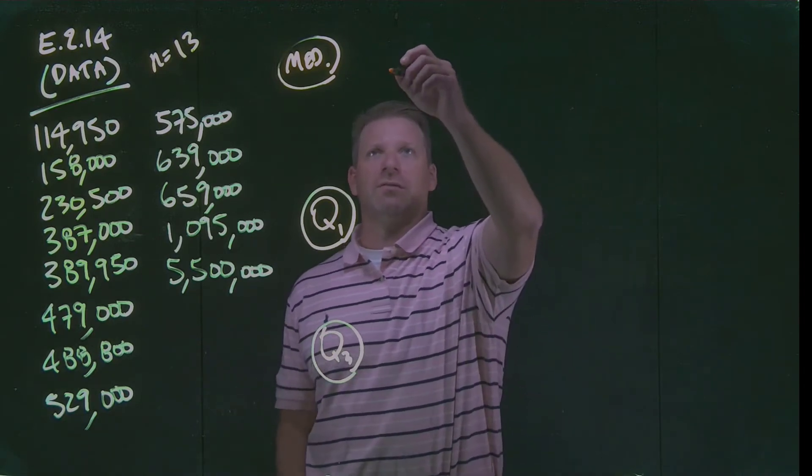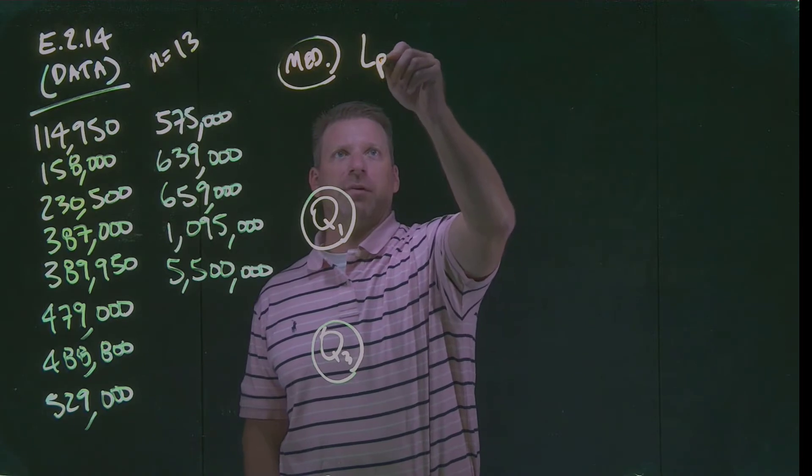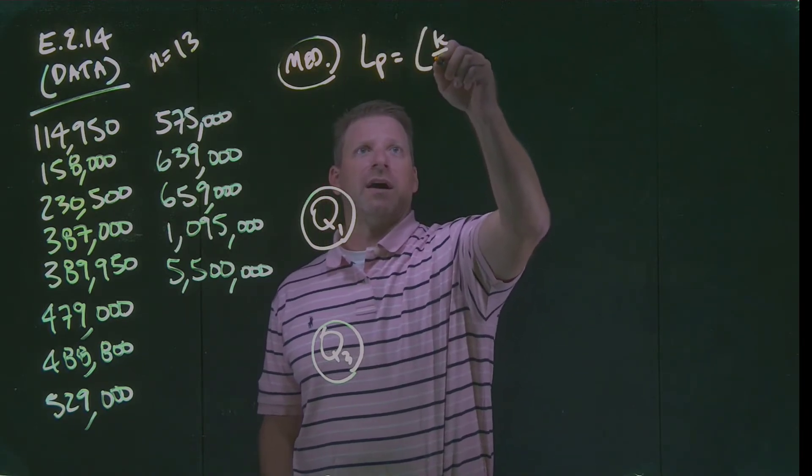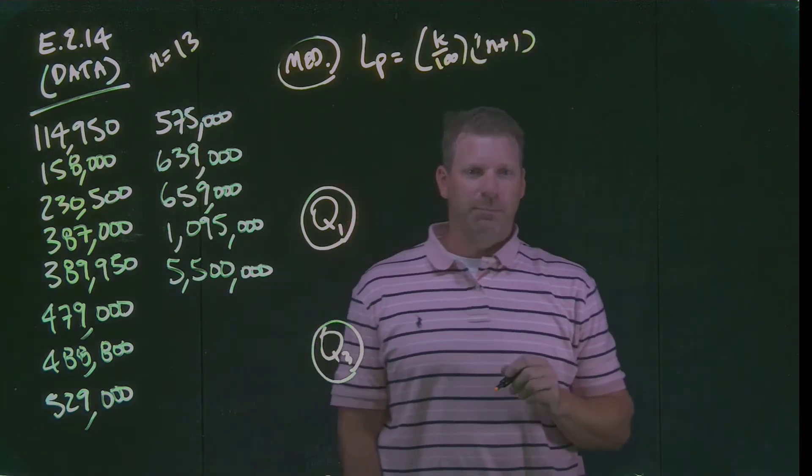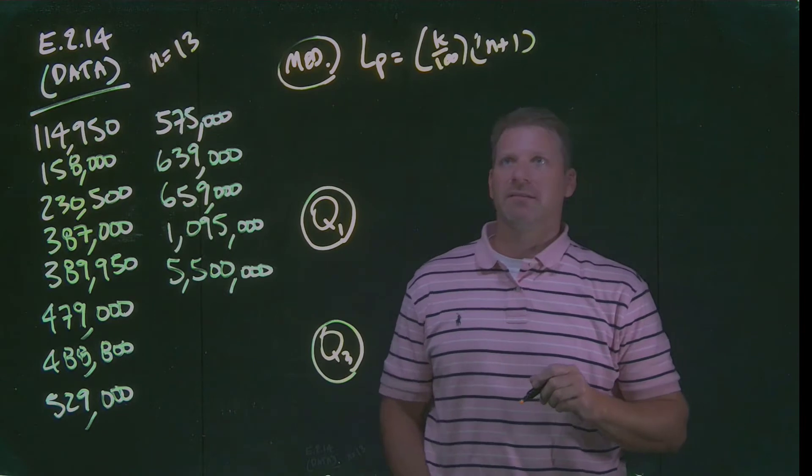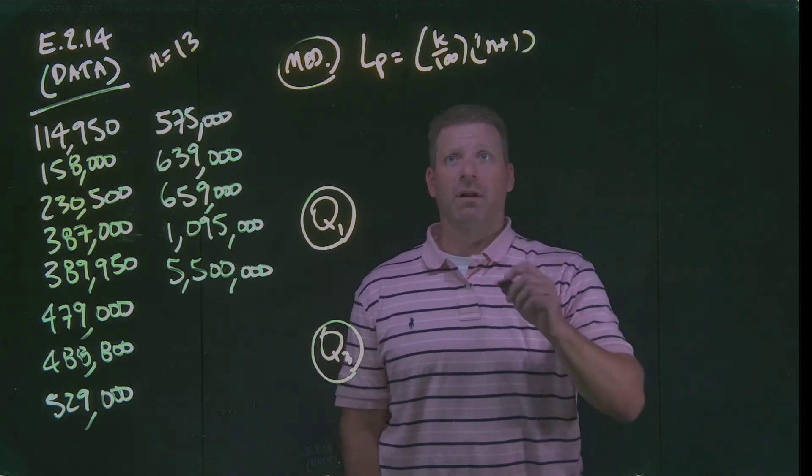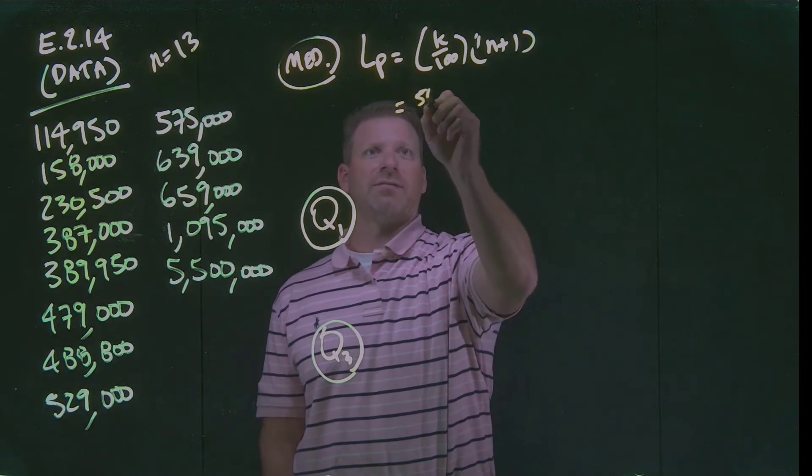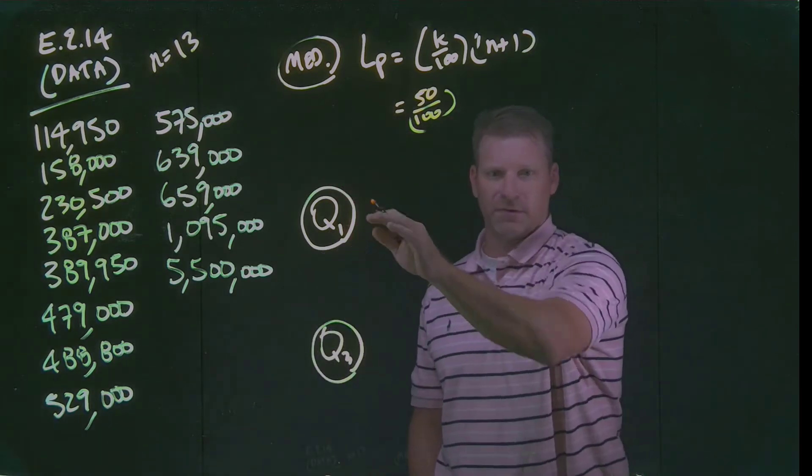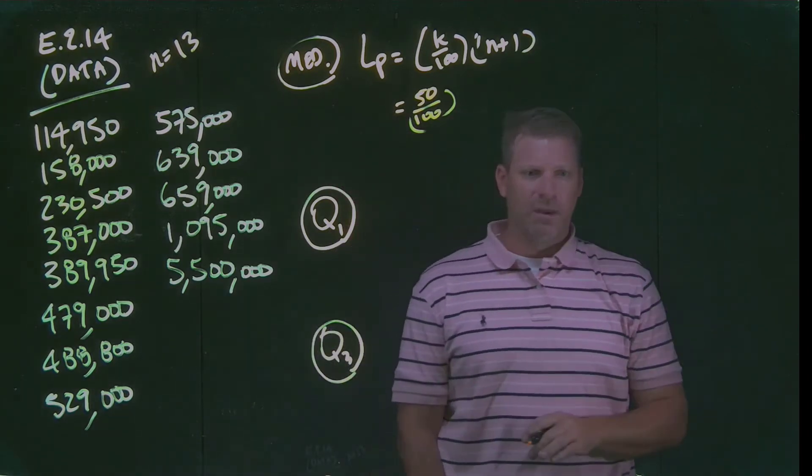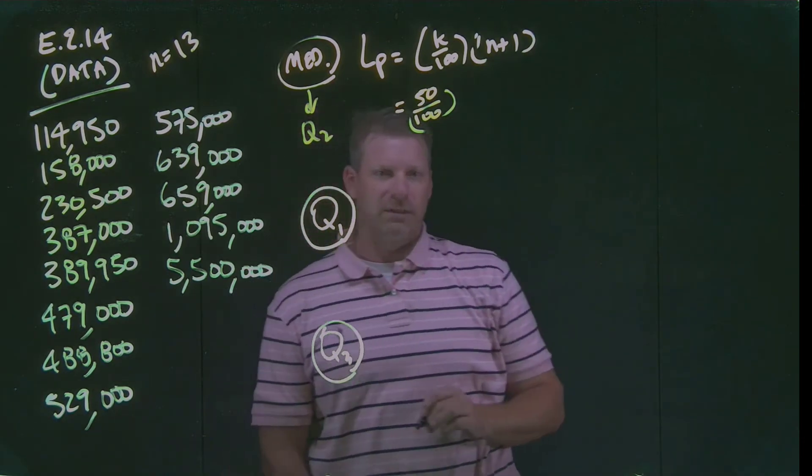Another way we can do this is we can use this formula. It's a very simple formula. It finds the location of any percentile equals K divided by 100 times N plus 1. K is our percentile value. In this case, K is the percentile that lines up to our median. We're going to look for the 50th percentile. So this formula is great because it allows us to use it for all kinds of different things, our first quartile, our third quartile measurement. Also, by the way, the median lines up and is equal to our second quartile value.